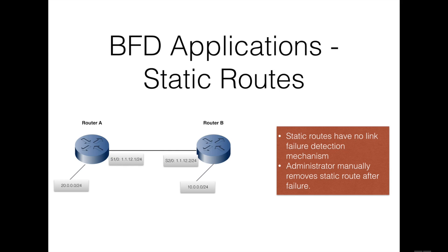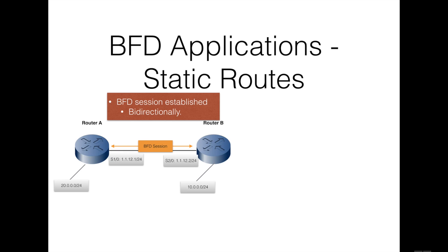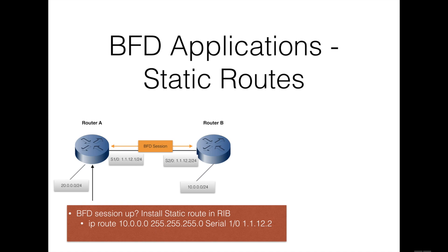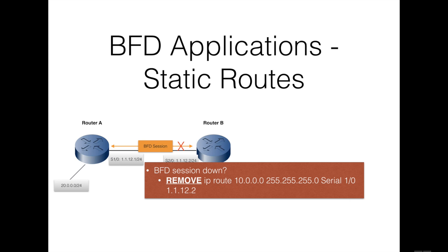Unlike dynamic routing protocols, static routes do not have a dedicated failure detection mechanism. After a fault occurs, the network administrator must manually delete the corresponding static route, which is time-consuming and extends downtime for large or critical infrastructures. Enabling BFD for static routing allows fast detection of the forwarding link status. A static route can be bound to a BFD session: if the BFD session is up, the static route is installed in the routing information base; if the BFD session is down, the route is deleted from the routing information base.